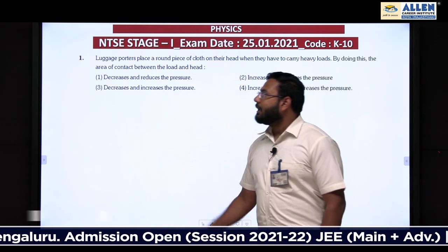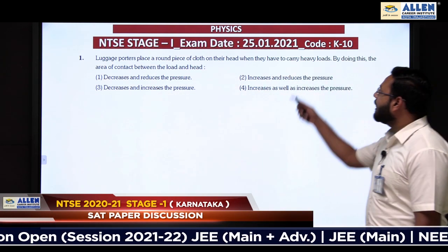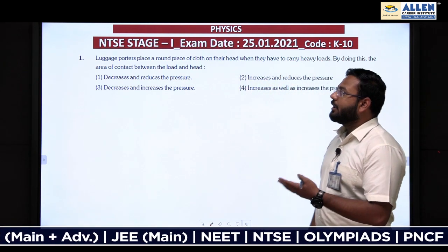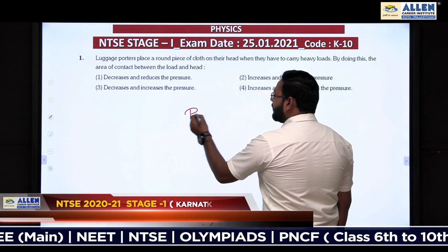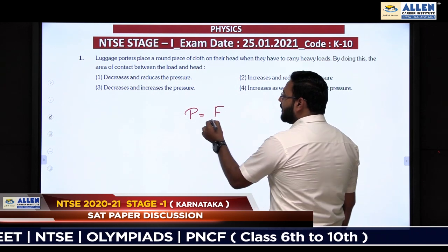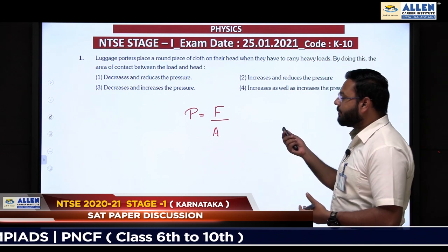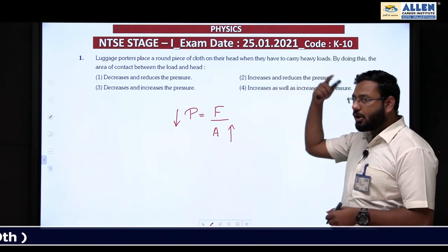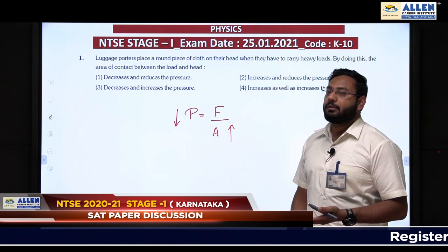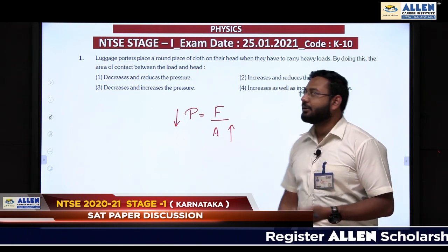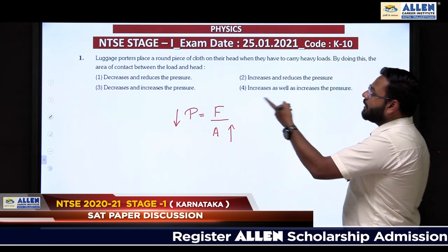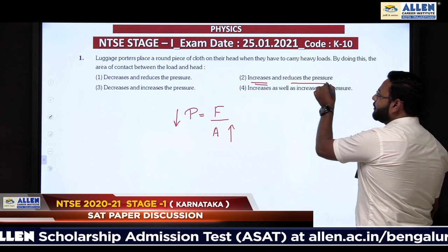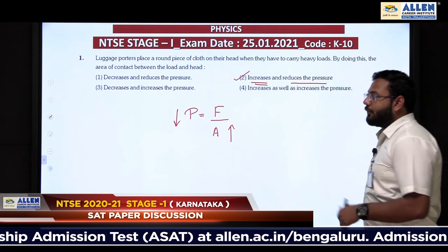Question number 1: Luggage porters place a round piece of cloth on their head when they have to carry heavy loads. By doing this, the area of contact between the load and head increases. We know that pressure equals force divided by area. Here the luggage has constant force. So when force remains constant and area increases, pressure decreases. By putting the cloth on their head, they increase the surface area, which automatically decreases pressure. Option number 2 is correct.